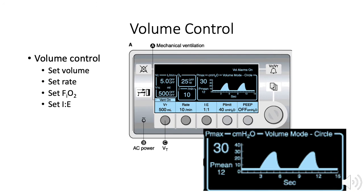Let's look at the volume control panel settings more closely. Tidal volume is set at 500 milliliters and is visualized as equal to the area under the curve. The waveform has a triangular shape. Peak inspiratory pressure depends on compliance but is measured here as P-max, which equals 30 centimeters of water. The rate equals 10, which is one breath every six seconds. The fraction of inspired oxygen being delivered is set at 25%. The I-to-E ratio is set at one-to-one, which means three seconds are spent in inhalation and three seconds are spent in exhalation.